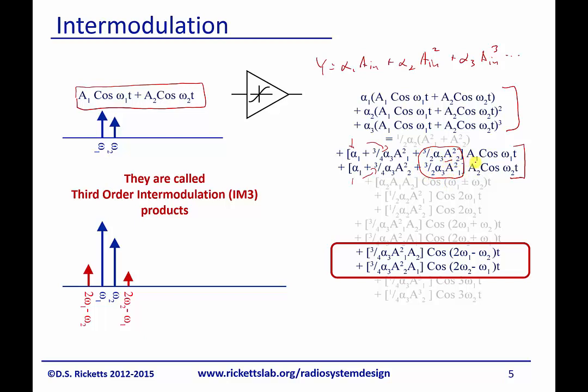So if you look, this is A2, whereas this is the A1 cosine. The second thing we get, and this is one of the big effects, is that we end up with two tones at 2 omega 1.